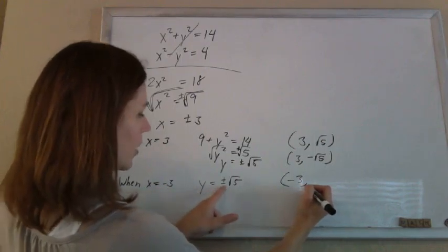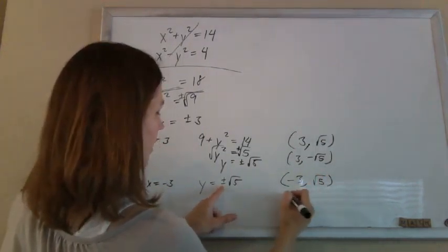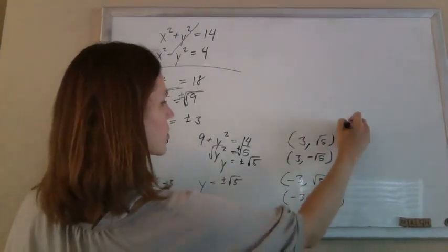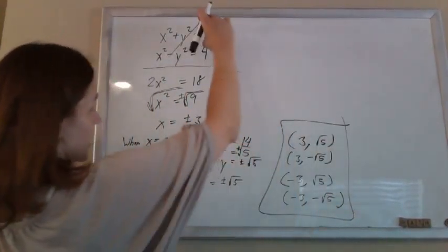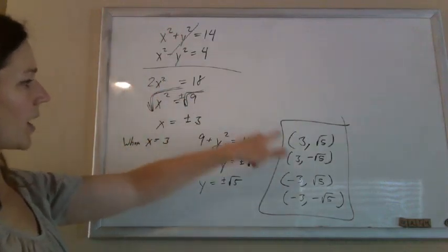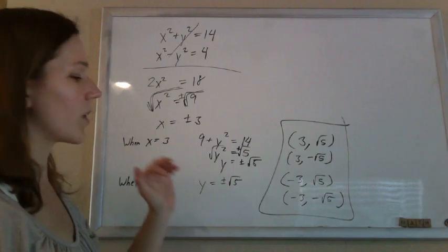When x is negative 3, y could be a positive root of 5. Or when x is negative 3, y could be a negative root of 5. So four ordered pairs will satisfy both of those equations. You could plug them in for x and y, and they should all work. It is gorgeous.